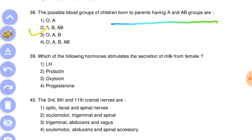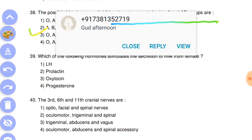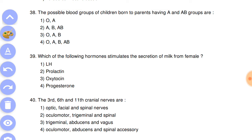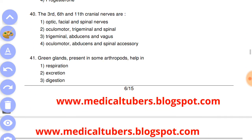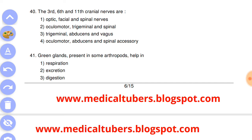Question number 39: which of the following hormones stimulates the secretion of milk from female? Answer is the third, oxytocin. Question number 40: the third, sixth, and eleventh cranial nerves are answer is the fourth, oculomotor, abducens, and spinal accessory.